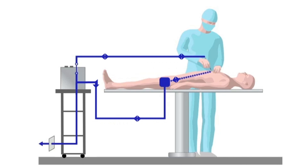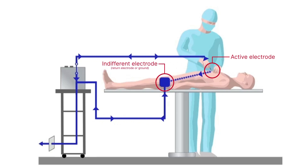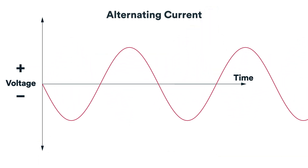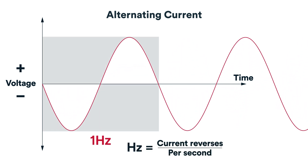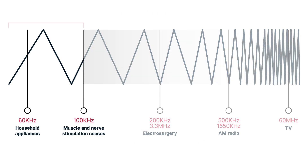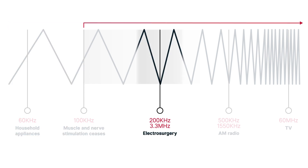Monopolar electrosurgery requires the patient's body to complete the circuit. The surgical device operates as the active electrode. At the other end of the electrical circuit is the indifferent electrode, also called the return electrode or ground. In this circuit, the current flows from the active electrode through the patient to the return electrode and back to the generator. The generator uses alternating current, which oscillates back and forth hundreds of thousands of times per second, measured in Hertz. Electrical nerve and muscle stimulation occurs with currents alternating below 100 kilohertz. With monopolar electrosurgery, the current operates well above 100 kilohertz, resulting in zero nerve or muscle stimulation.